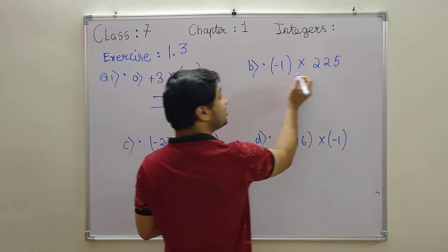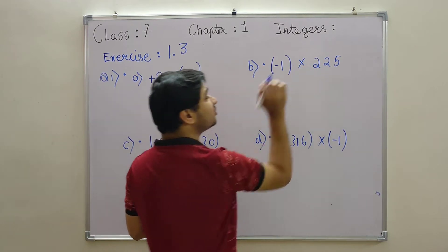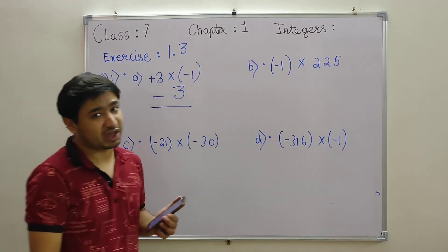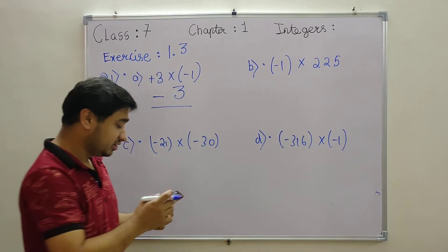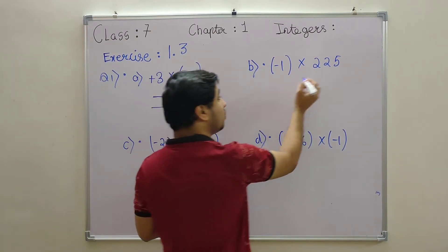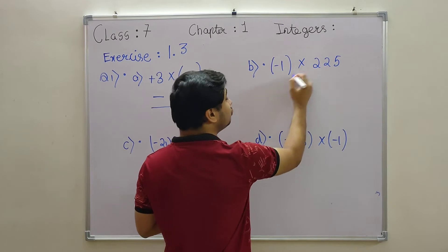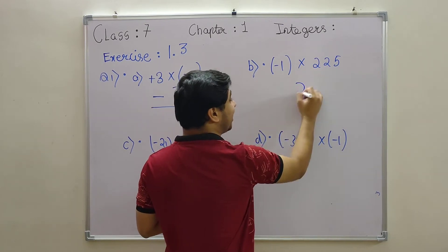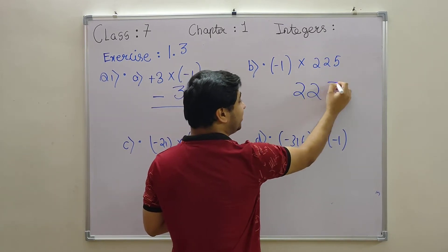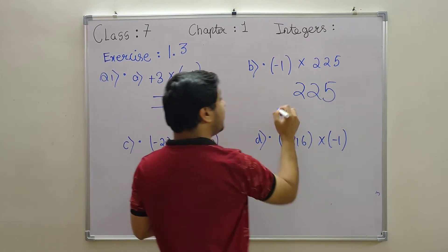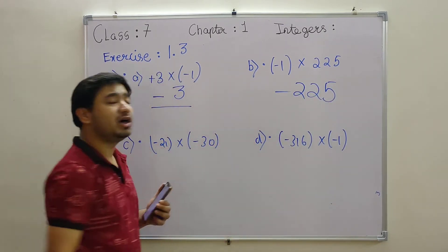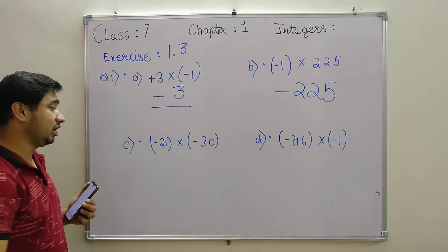Next option: a number with no sign in front has a plus. So 1 into 225 gives 225, but the sign is minus — answer is minus 225.